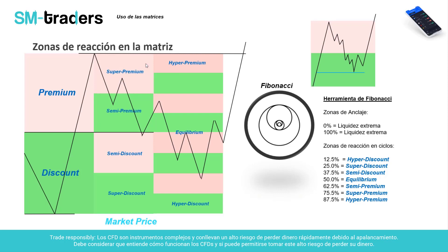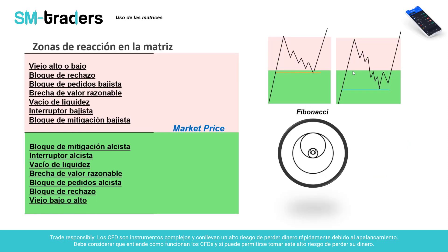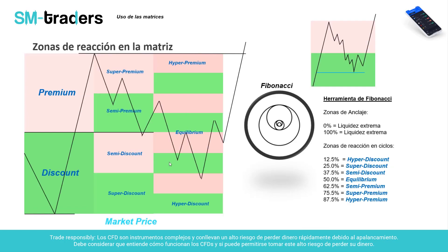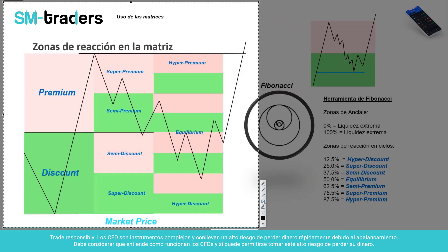Pasándonos a un esquema de cómo funciona: tenemos un mínimo en discount y un máximo en premium. El precio baja a semi-premium. Te haces la pregunta: ¿el precio se va a quedar superficialmente casi en el 55%, 53%, o realmente va a venir más abajo a tener un retroceso profundo? Hay personas que manejan los conceptos de trading institucional, y por lo general aquí se formó el bloque de pedidos, y aquí tienes la vela verde que valida el bloque.